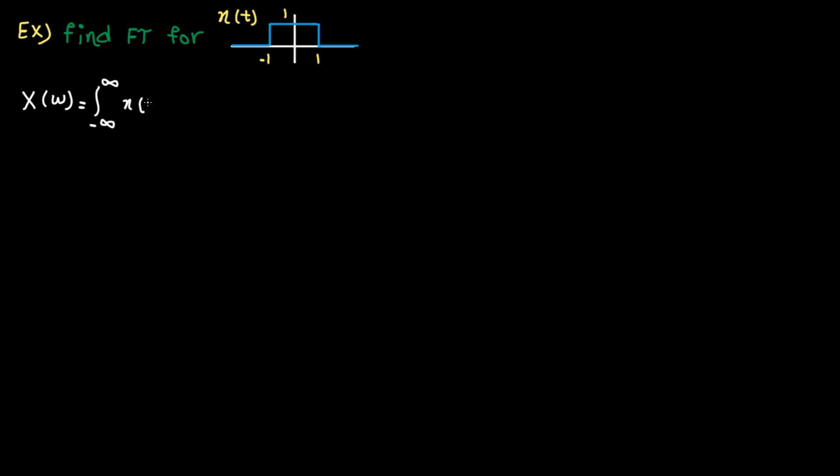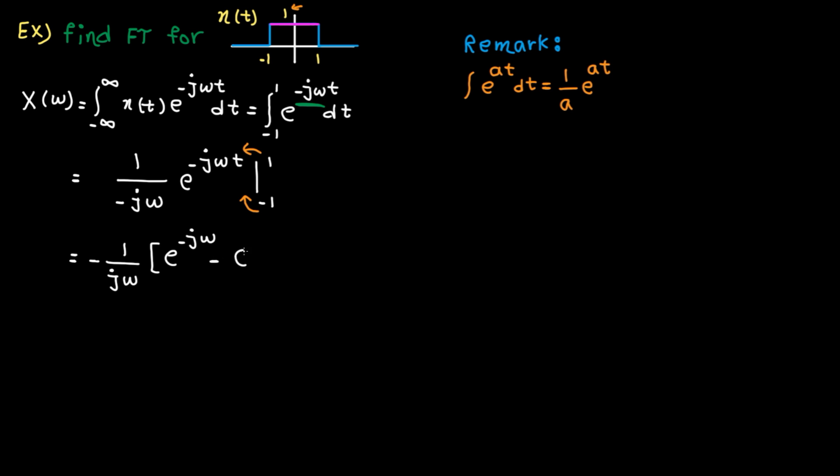Here is the Fourier transform integral. Xt is non-zero from minus 1 to 1. So the integral is non-zero only in this range. In this interval, Xt is 1. So we get this. From calculus, we know integral of e to the power of a t is this. In this example, minus j omega is a. So here is the solution to the integral. Now let's replace t by the upper and lower bounds. Bring the minus sign in. Here is what we get.